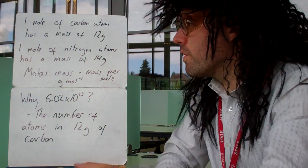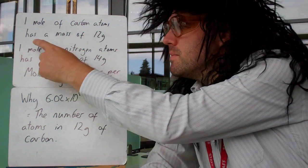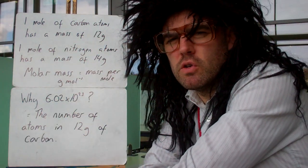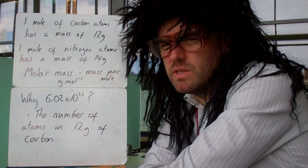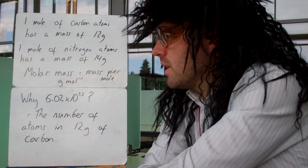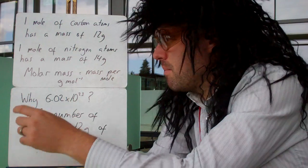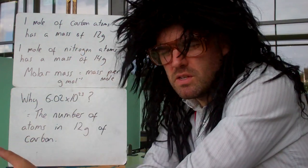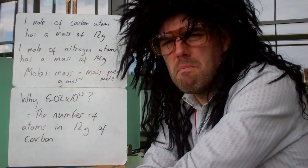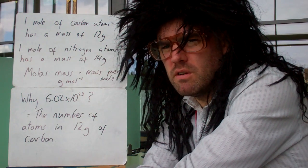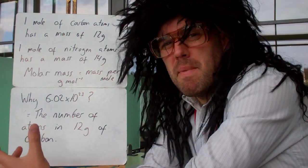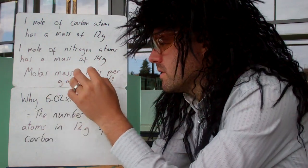So one mole of carbon atoms has a mass of 12 grams. If you take 6.02 times 10 to the 23 atoms of carbon, they weigh 12 grams. If you take the same number of nitrogen atoms — nitrogen atoms are slightly heavier — that weighs 14 grams. So one mole of nitrogen atoms weighs 14 grams. We call the mass of one mole the molar mass.